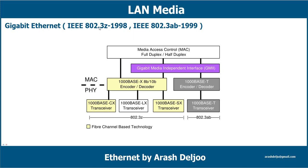In 802.3z, optical fiber and also coaxial cable are used. 802.3z is commonly referred to as 1000Base-X, where X refers to either CX, SX, LX, or non-standard ZX. The variants include 1000Base-CX, 1000Base-LX, 1000Base-SX, and the non-standard 1000Base-ZX.